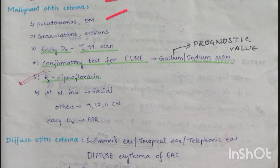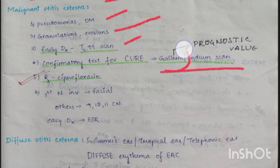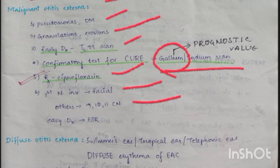Malignant otitis externa is mostly caused by Pseudomonas and occurs in patients with diabetes mellitus or immunocompromised patients. Granulations and erosions are seen. Early diagnosis is with Tc-99 scan. Confirmatory test and first cure assessment use gallium and indium scan — gallium scan has prognostic value. Treatment involves ciprofloxacin. The first nerve involved is the facial nerve; other nerves involved are cranial nerves 9, 10, and 11. ESR is used for easy diagnosis.